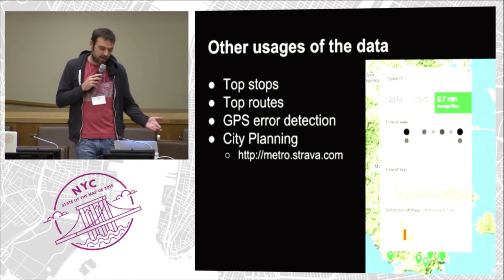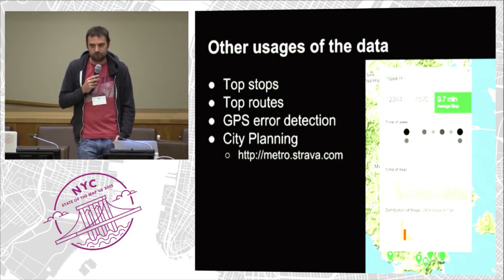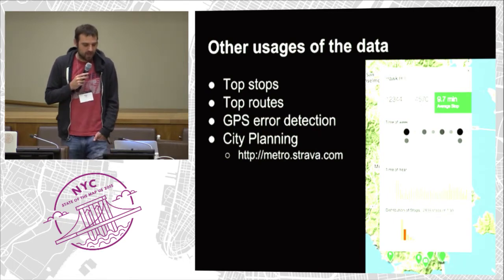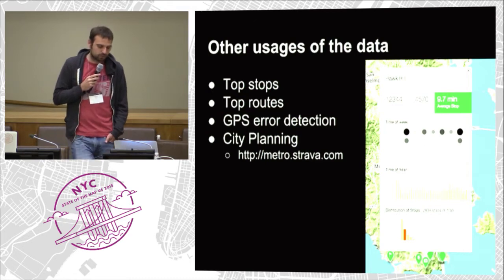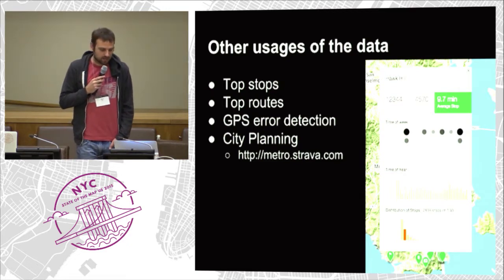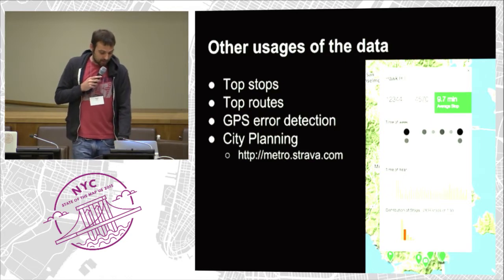We use this data for a lot of things: figuring out top places to stop — coffee shops, viewpoints — top routes if you're in a new city, GPS error detection, and we also sell it to cities for city planning. Anyone doing bike routing and wanting to know usage patterns has found it very useful.